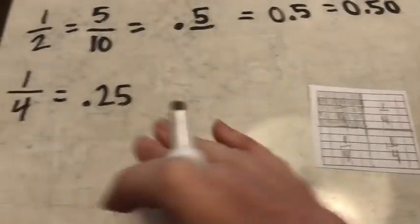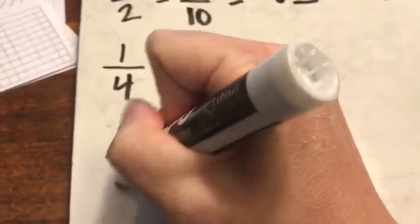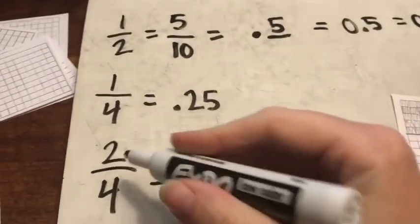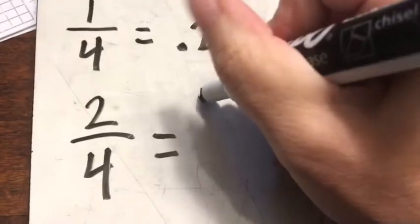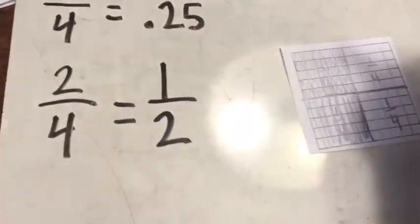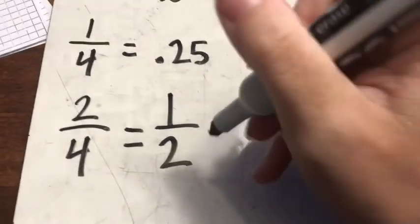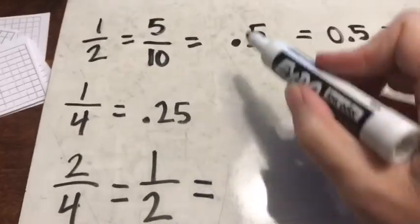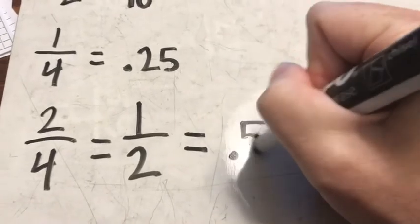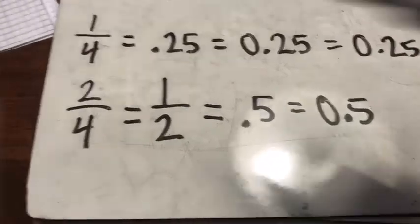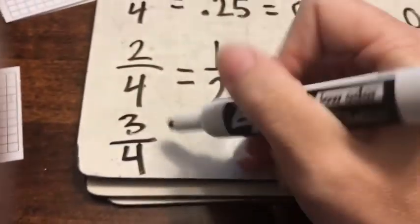We can also see that two fourths would be the same as the half — and you do want to talk about that, because when kids have to find common denominators later for adding and subtracting fractions, understanding those equivalent relationships will be super helpful. Two fourths is the same as a half, so two fourths is also five tenths. And from one fourth and two fourths, I can figure out three fourths too.